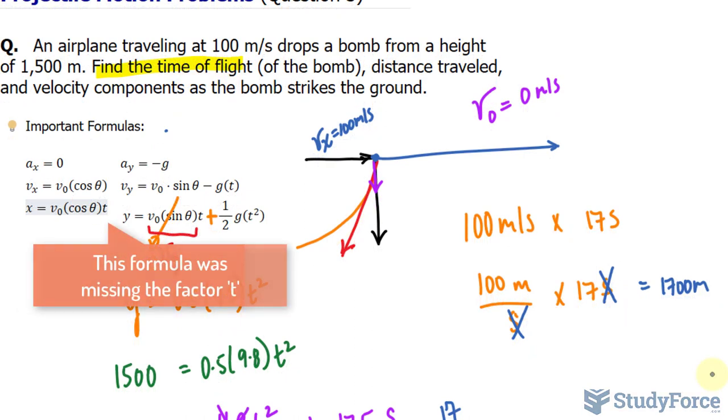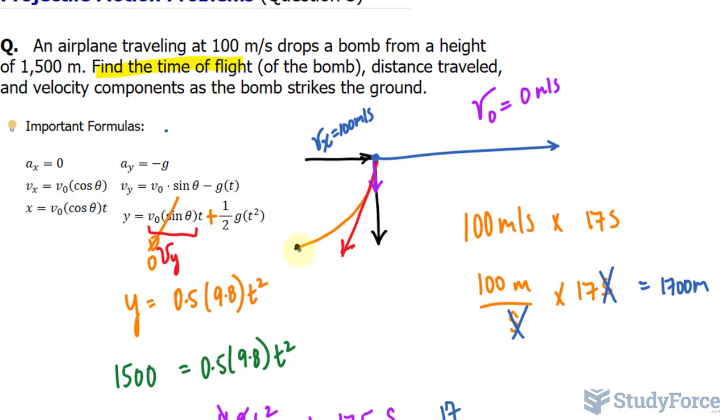And finally, we want to find the velocity components as the bomb strikes the ground. If we were to extend a vector from where it strikes the ground, they are looking for the y component and the x component. For that, we can use these two formulas. For the x component, we can say that it was 100 as the initial velocity meters per second times cosine at an angle of 0. Cosine of 0 equals 1, so 100 times 1 is the x component.